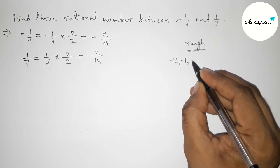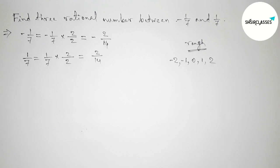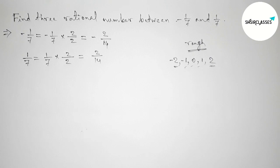So next between -2 to 2 we can get here 3 integers: -1, 0, 1. So by these 3 integers we can form 3 rational numbers.